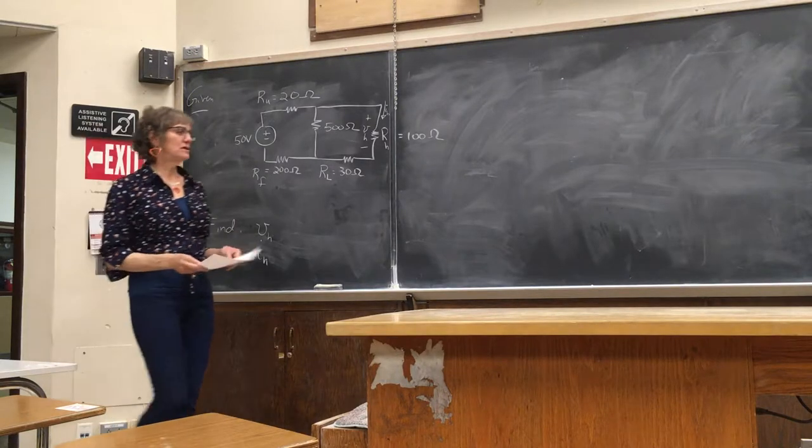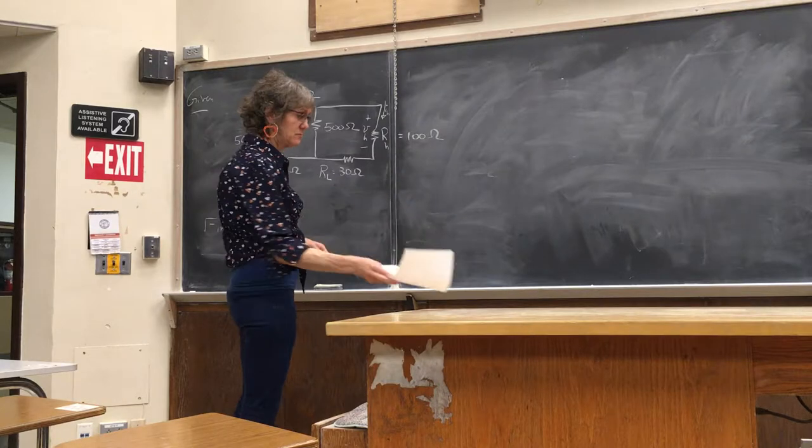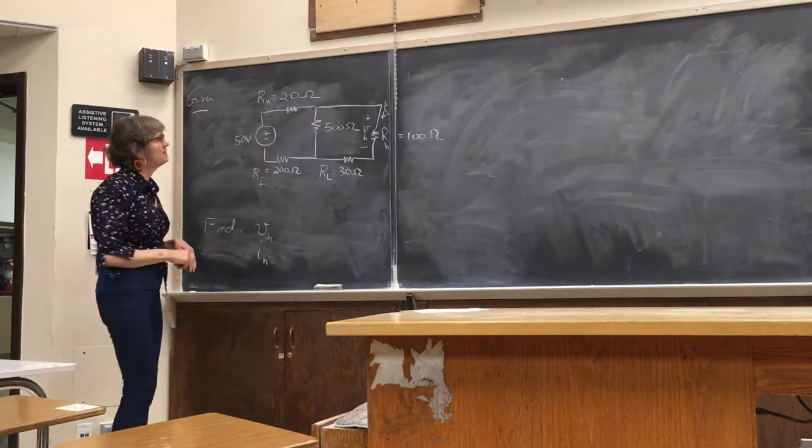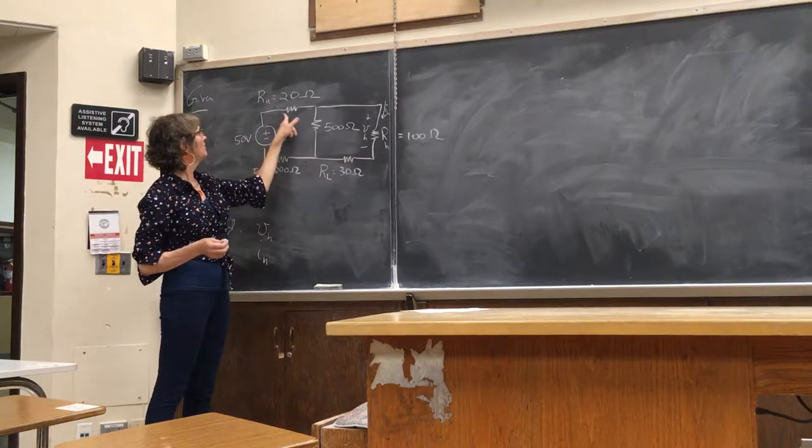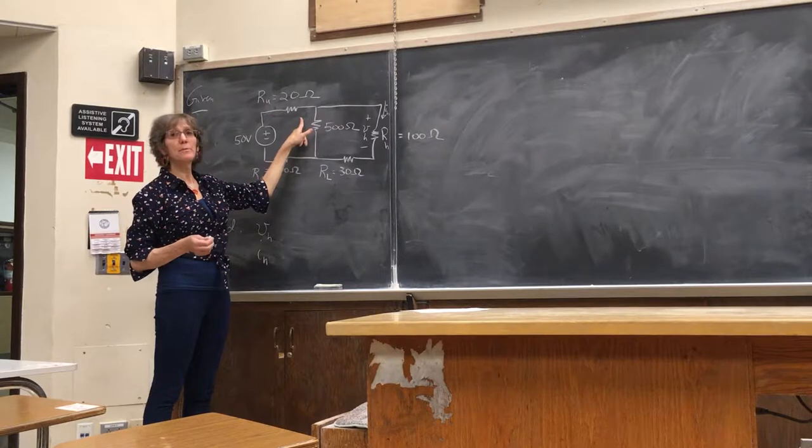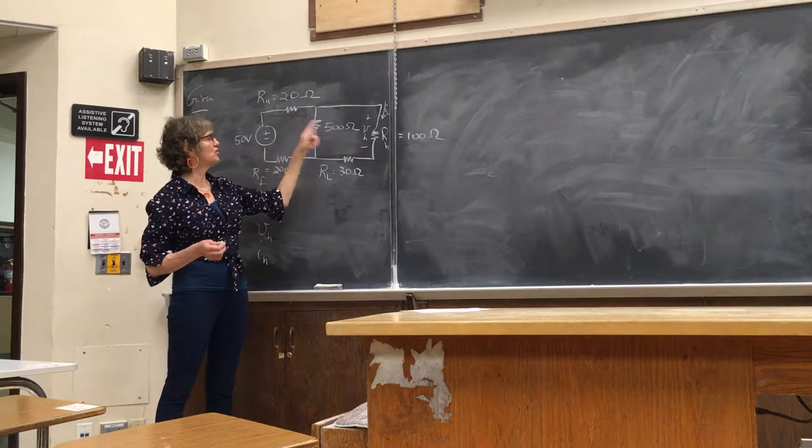All right, this is actually pretty straightforward. There's a lot of ways we can do it. I would probably find the equivalent resistance. Here's what my idea is. Tell me if you've got a better idea. I'll find the equivalent resistance to all these resistors and then find the current going into that branch.